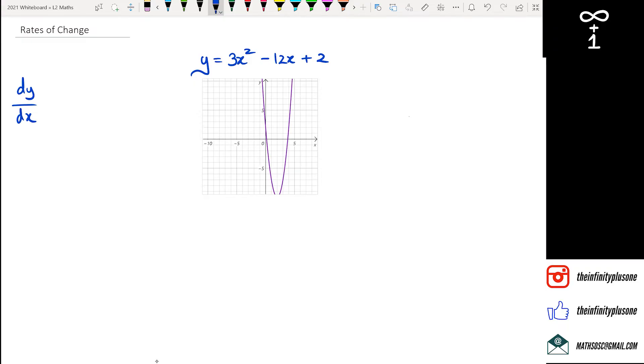So if you look at the function here which is y equals 3x squared minus 12x plus 2, if I differentiate that what I'm going to get is 6x minus 12.